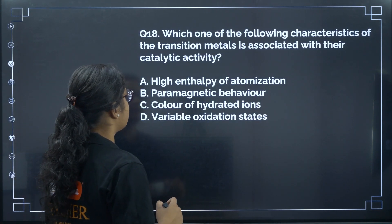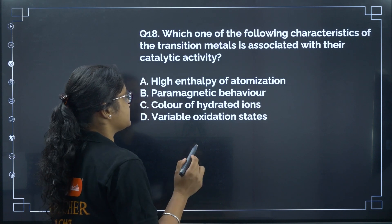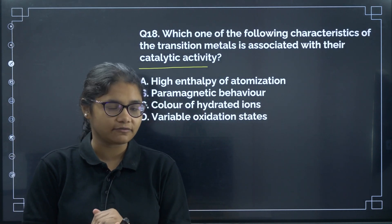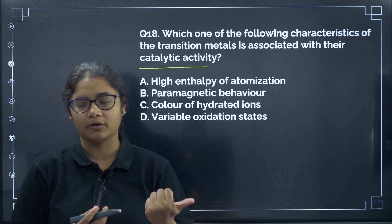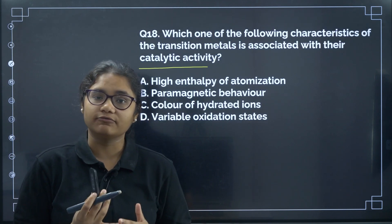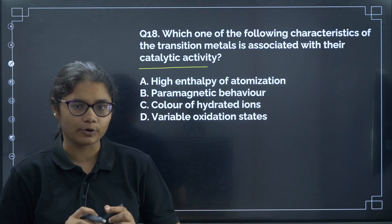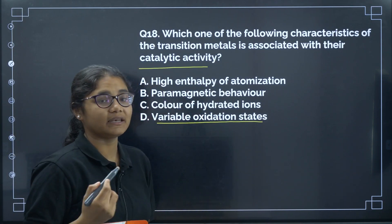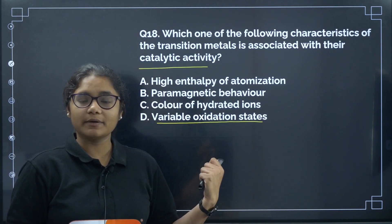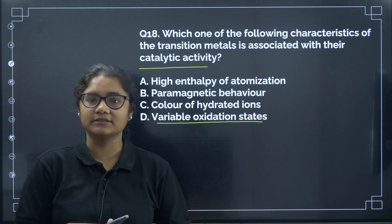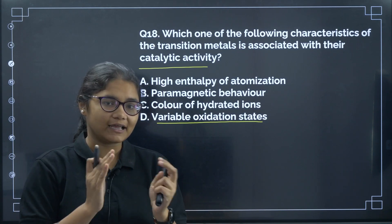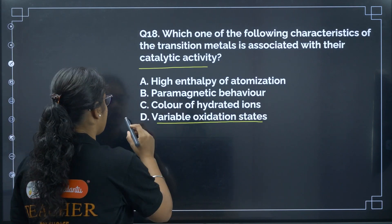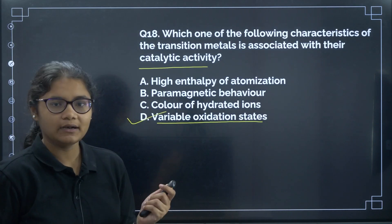Question 18: Which characteristic of transition metals is associated with their catalytic activity? Transition metals show catalytic activity because of their ability to have variable oxidation states. They have variable oxidation states because of the small energy difference between (n-1)d and ns electrons. The correct answer is option D.